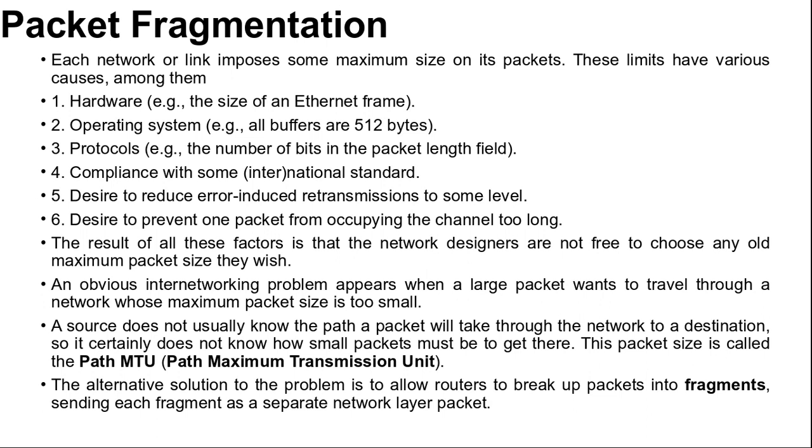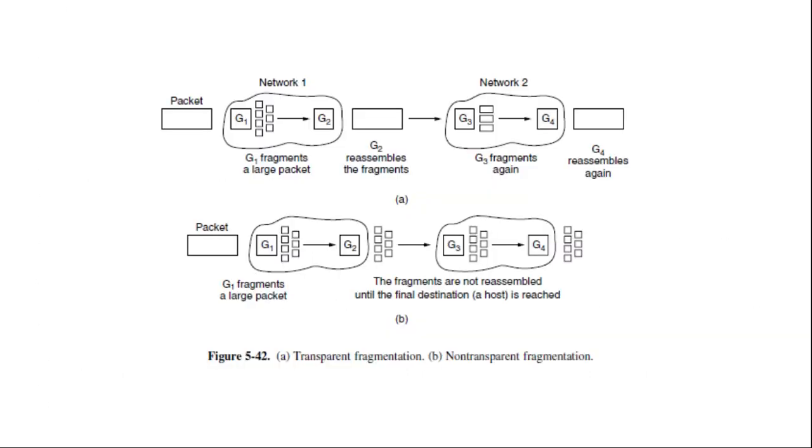Two opposing strategies exist for recombining the fragments back into the original packet. The first strategy is to make fragmentation caused by small packets network transparent to any subsequent networks through which the packet must pass on its way to the ultimate destination. This process is shown in figure A, transparent fragmentation.